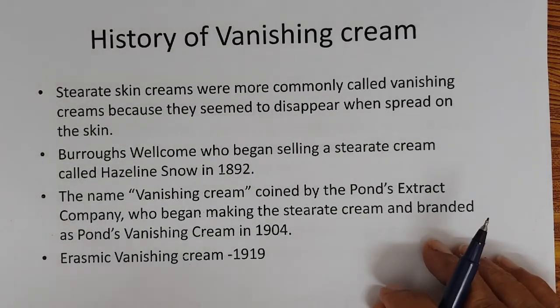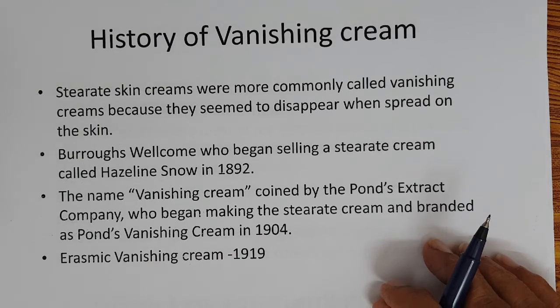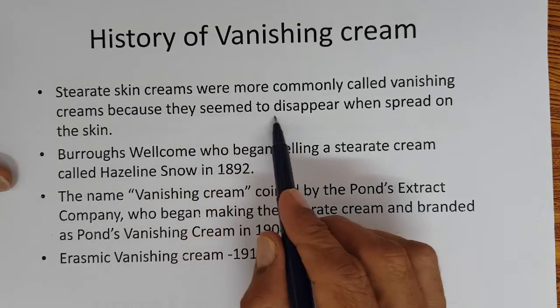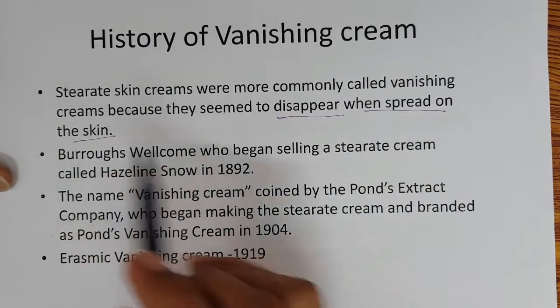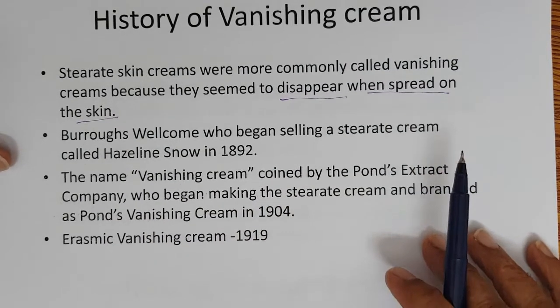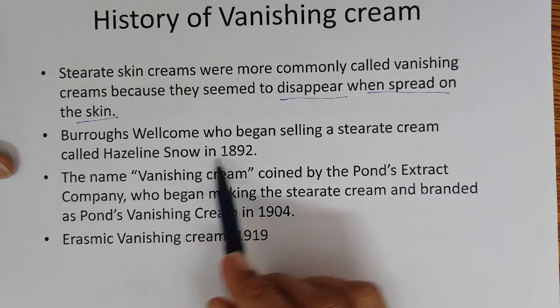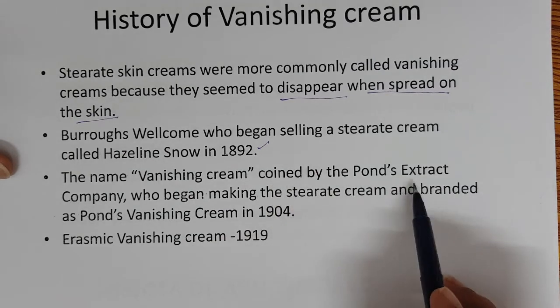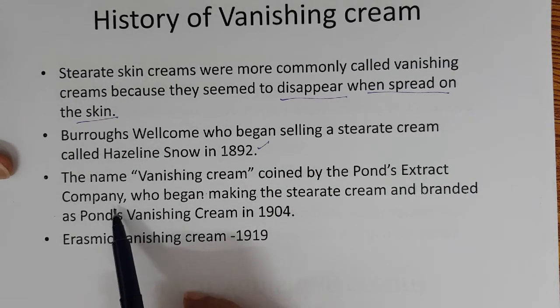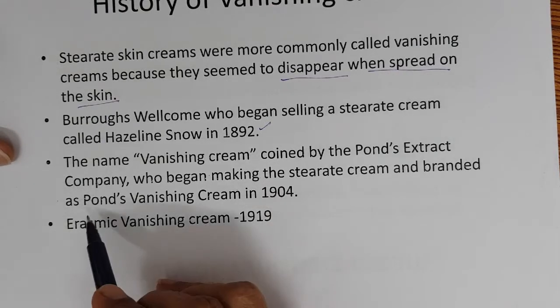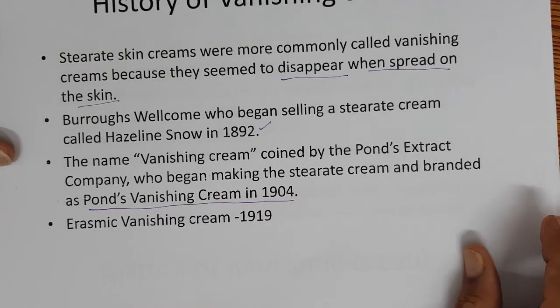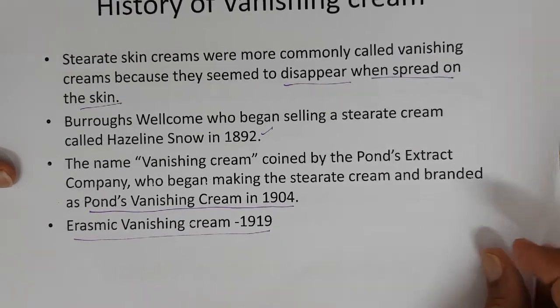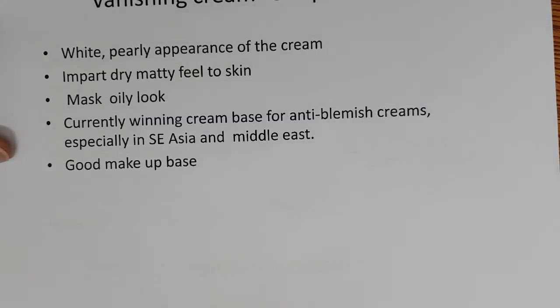Vanishing Cream originally called Sterate Cream. More commonly called Vanishing Cream because they seem to disappear when spread on the skin. Burroughs Welcome began selling Sterate Cream called Haslund Snow in 1982. The name Vanishing Cream probably coined by Ponds Extract Company who began making Sterate Cream and branded as Ponds Vanishing Cream in 1904.